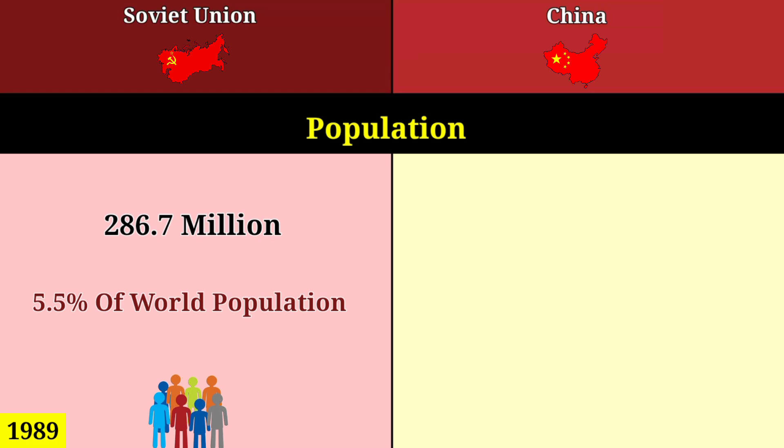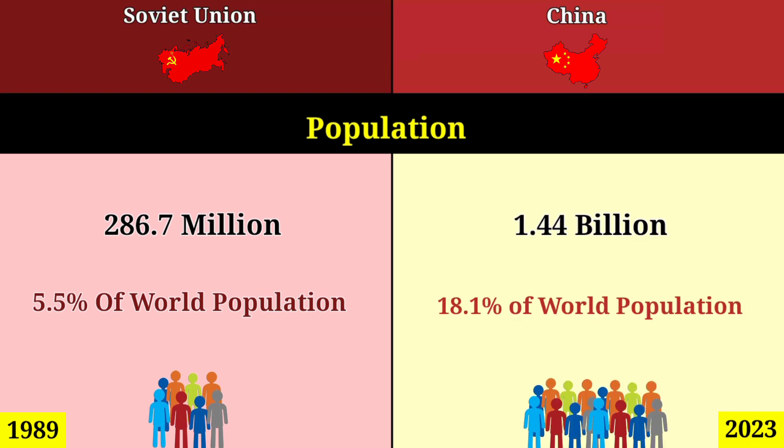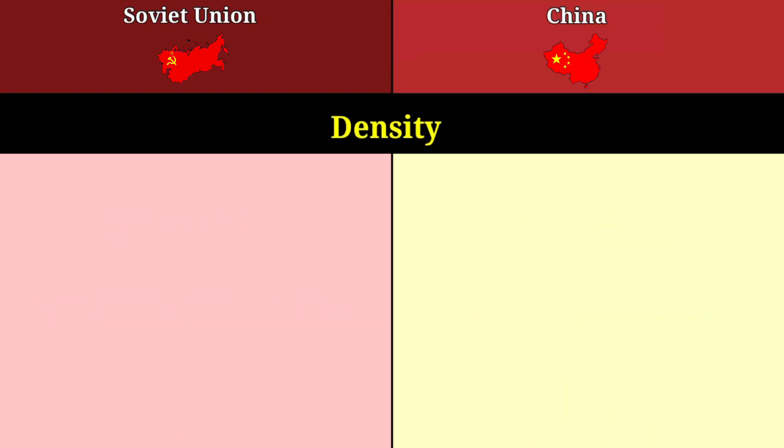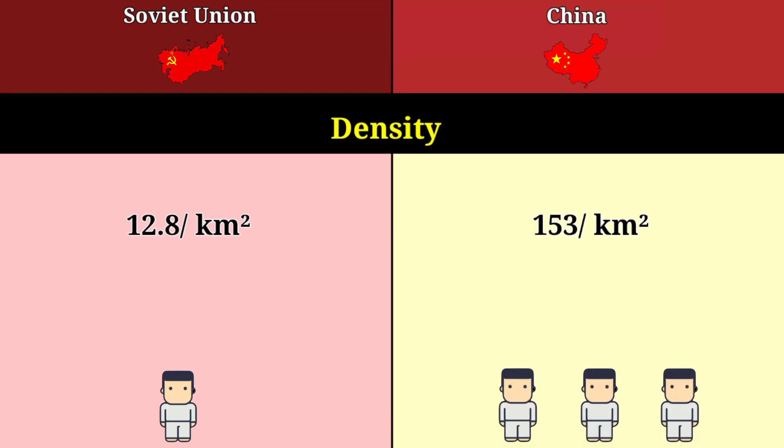Population: 286.7 million for the Soviet Union, 1.44 billion for China. Density: 12.8 per square kilometer for the Soviet Union, 153 per square kilometer for China.